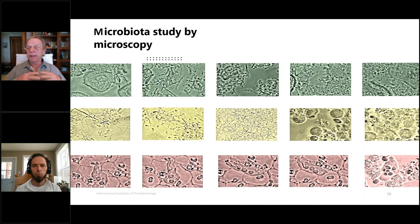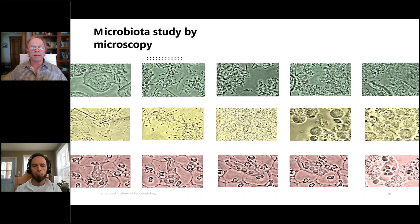When you get gingivitis from plaque, local or systemic factors, you may find some white cells and very active bacteria — mostly the orange and red complexes of Socransky: spirochetes of the red complex, vibrio representing Tannerella also in the red complex, and bacilli from the orange complex. Gingivitis is relatively easy to cure — good hygiene, remove plaque, remove local and systemic factors, and you go back to health.